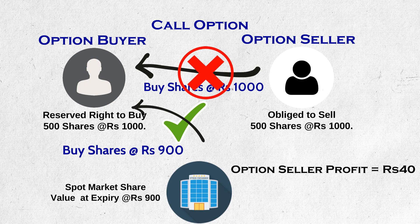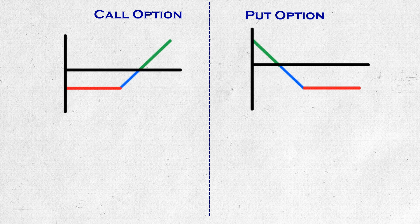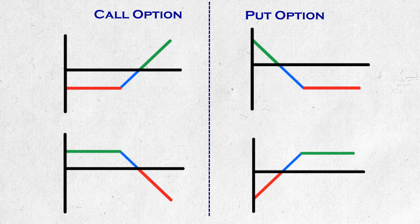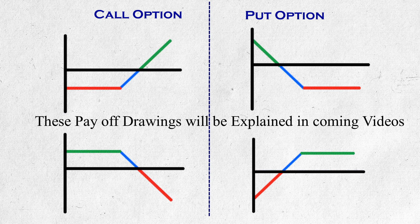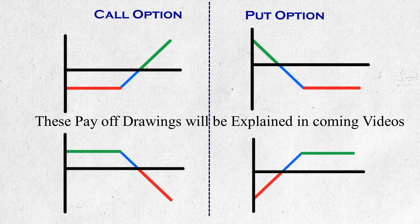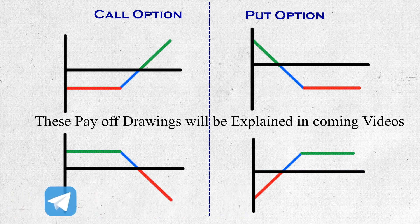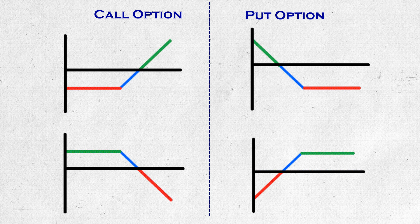This is all about call options. Now let us compare call option and put option side by side. In both options, the option buyer is profited if the price of the security moves in favor of his direction — his profit increases with price moving more in his direction, and the same amount is lost by the option seller. If the price moves against the option buyer, no matter how much it moves, he loses only the premium amount and the same amount is gained by the option seller. If the price stays where it is, then the option seller benefits — but the benefit is only limited to the premium amount.